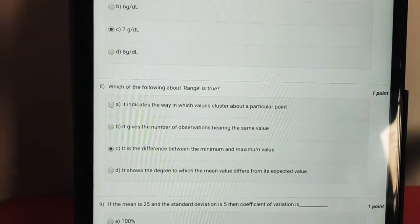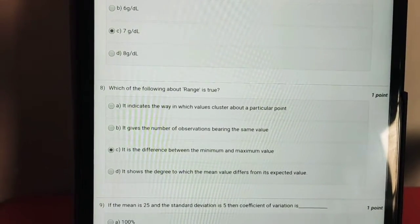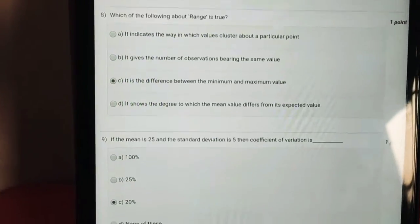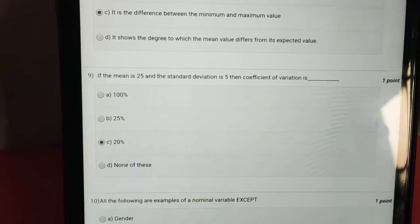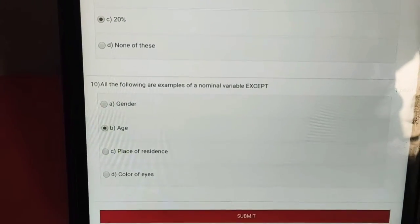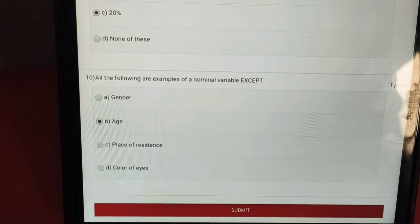Question 8, the answer is option C, it's the difference between the minimum and the maximum value. Question 9, the answer is option C, 20%. For question number 10, the answer is option B, age.